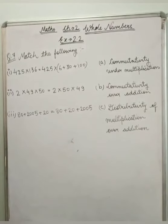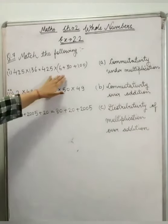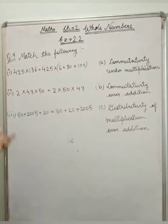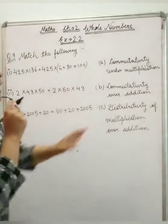Question 7, last question of this exercise: match the following. Now we have some numbers given, and here we have names of properties. So I am going to tell you how to solve, what property is used.